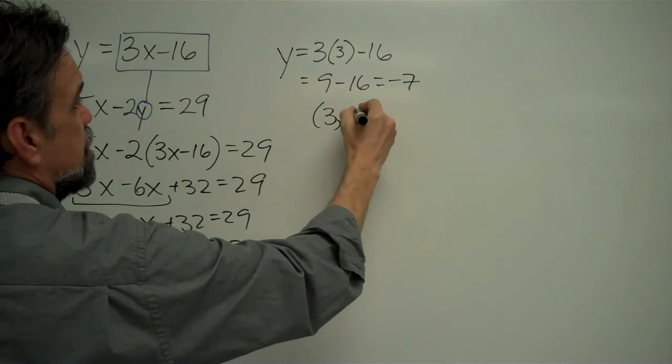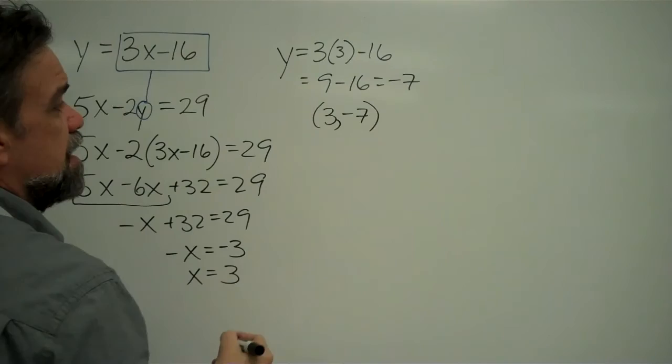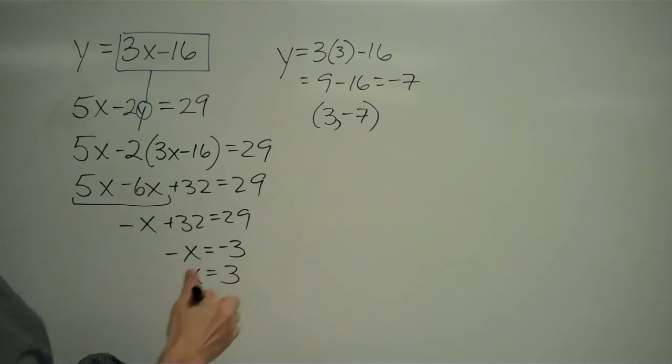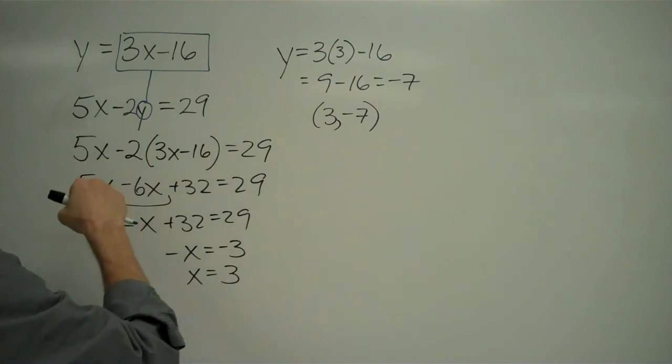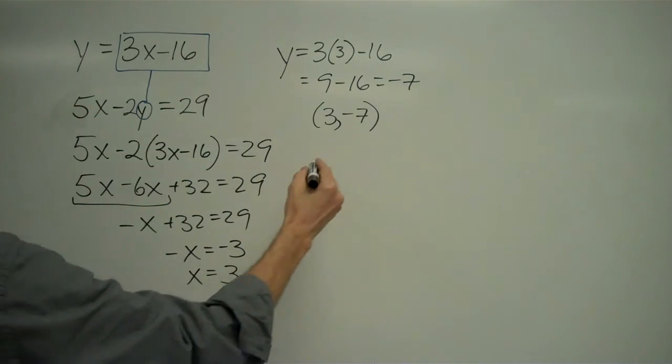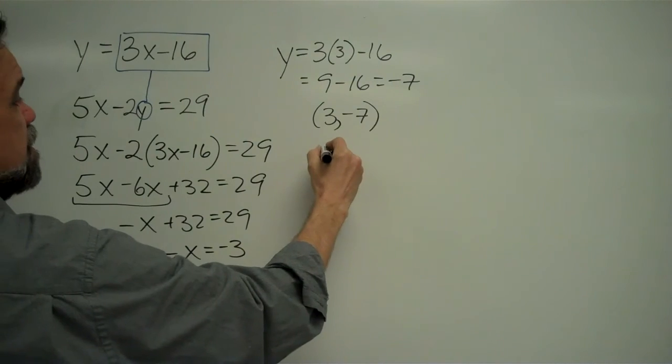So now I have my complete answer which is x equals 3, y equals negative 7. And just to make sure, I'm going to take this solution for x and y and put them both into this equation here just to check and make sure that I'm right.